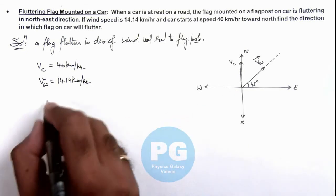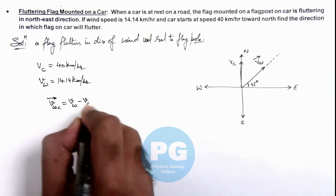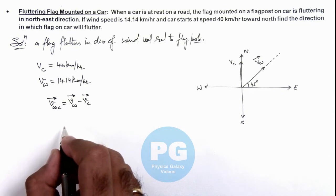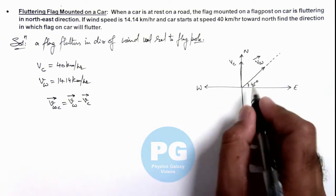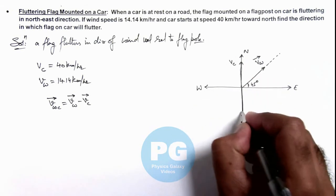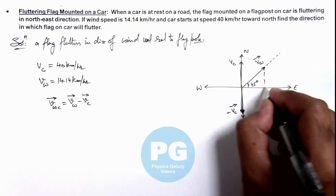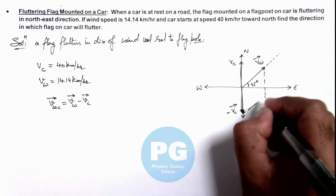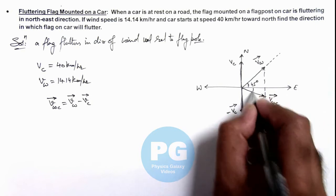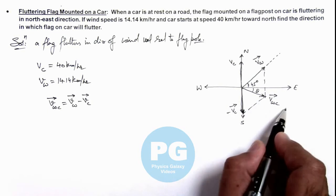If we calculate the velocity of wind with respect to the car, this can be given as V_w minus V_c. Using the velocity triangle, V_w is in the north-east direction and minus V_c is in the south direction. By the parallelogram law of vector addition, the resultant gives the direction of velocity of wind with respect to the car. This angle theta is the direction in which the flag will flutter — along the direction of wind with respect to the car.